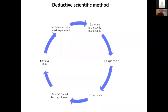It's useful to show how these practices corrupt and short circuit the deductive scientific method. Here is the happy cycle of deductive science: from generating and specifying predictions, designing a study, collecting the data, analysing that data and testing it against our hypotheses, interpreting it, and either writing that study up for a journal or conducting another experiment or both.